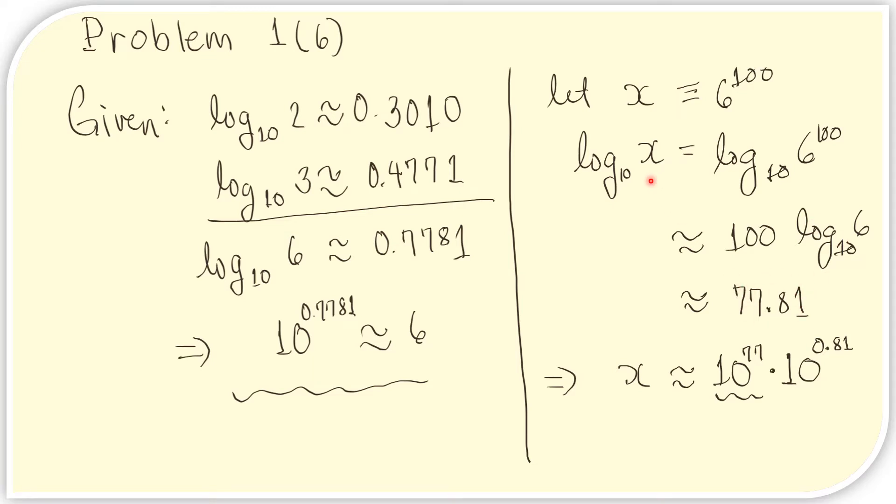Now we know that the log of x to the base 10 is this number. We can rewrite this in exponential form. 10 raised to this number equals x. We can also separate the exponent into the part with the integer and the part with the decimal. So this is now our expression for x.